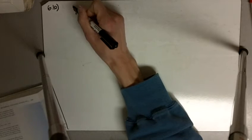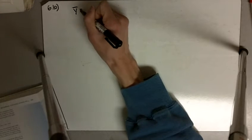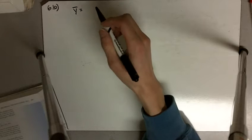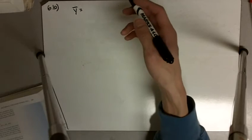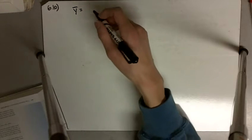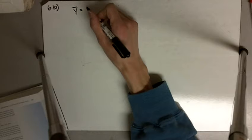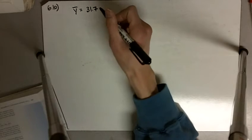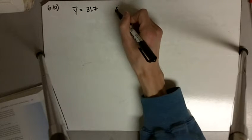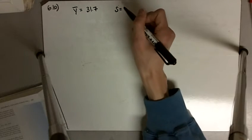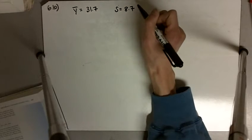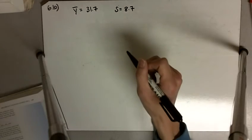The mean of the sample — notice I'm writing y-bar instead of mu, because mu is the population mean and y-bar is the sample mean — that is 31.7. And the standard deviation of the sample, given by s, is 8.7 milligrams.